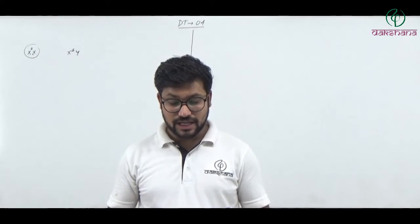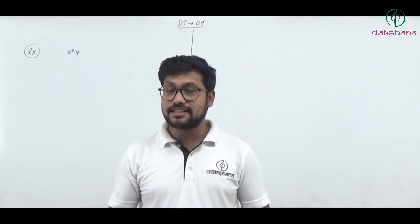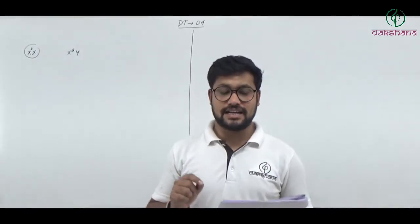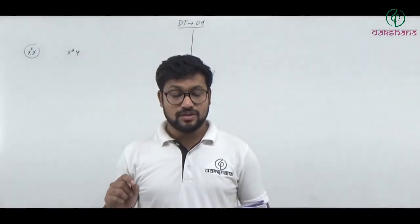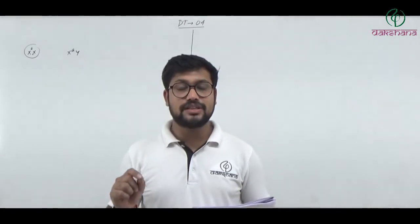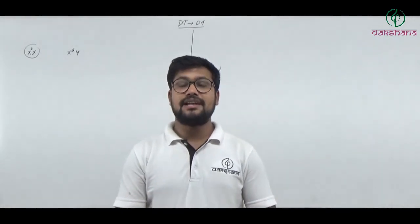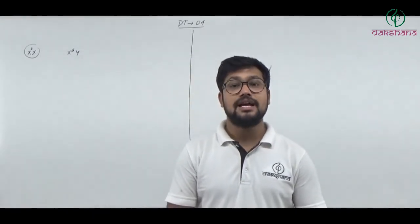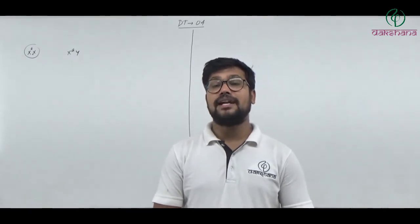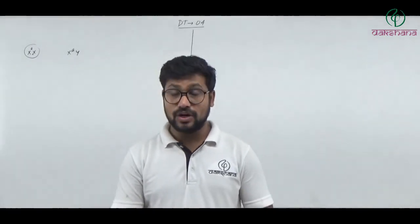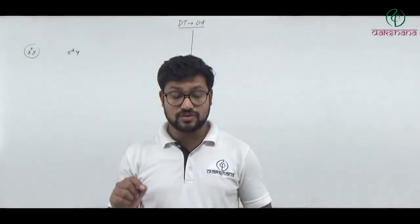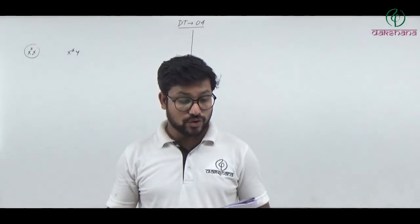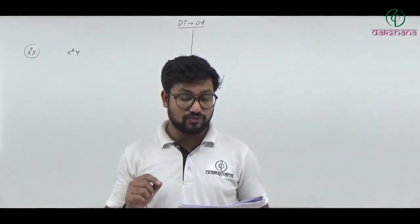Question number fifty-seven: Vas deferens arises from cauda epididymis. The epididymis has three parts: caput, corpus, and cauda. After cauda epididymis, the next part is vas deferens. So vas deferens arises from cauda epididymis. Question number fifty-seven's first option is the right answer.